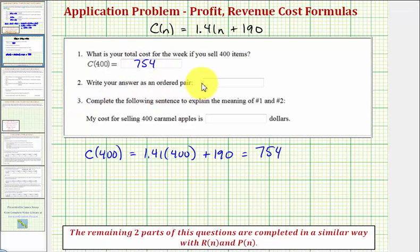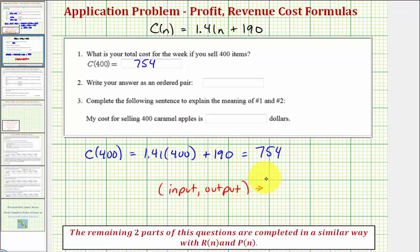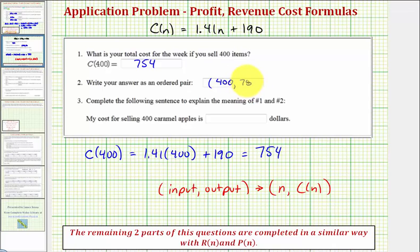We're asked to write this as an ordered pair. In general for a function, the ordered pair is the input comma the output. For our cost function, the input is n and the output is C of n, so the ordered pair would be (400, 754). Remember, an ordered pair does need to be in parentheses. To complete the sentence: my cost for selling 400 caramel apples is $754.